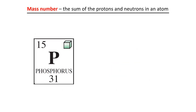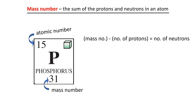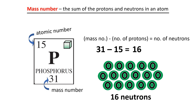Last example: the element phosphorus has an atomic number of 15 and a mass number of 31. Mass number minus the number of protons gives the number of neutrons. Phosphorus has a mass number of 31 and an atomic number of 15, which is the same as the number of protons, so this is 31 minus 15, which equals 16 neutrons.